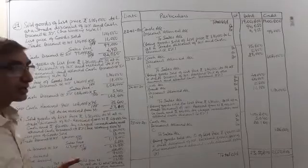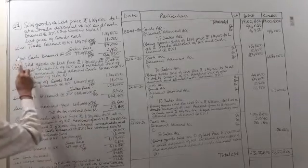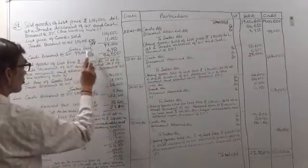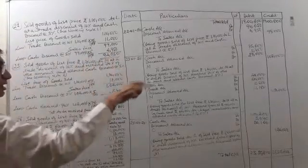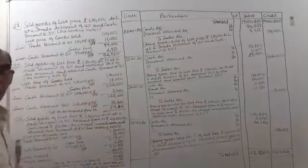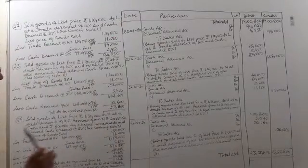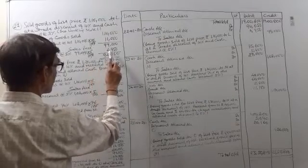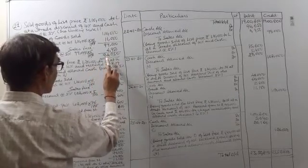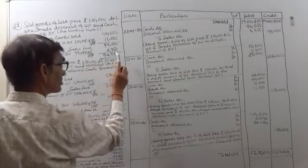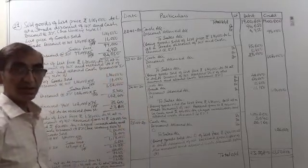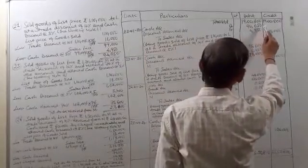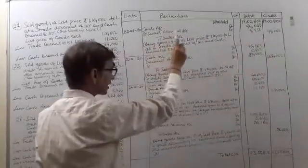A 5% cash discount was allowed. Less cash discount at the rate 5%: 99,000 into 5 by 100. Note that trade discount will not be recorded anywhere in the books of accounts. 5% of 99,000 comes to 4,950, so the balance left is 94,050. This was the cash received by the firm, so cash account will be debited 94,050.